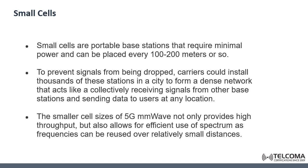The large number of small cells will also provide subscribers with improved signal quality for more efficient data transfer. The shorter distance between radio sites will also help overcome the short signal reach of the higher frequency 5G radio spectrum, since millimeter waves can only travel shorter distances. The smaller cell size of the 5G millimeter wave therefore not only provides high throughput, but also allows operators efficient use of spectrum because the frequency can be reused over relatively small distances.